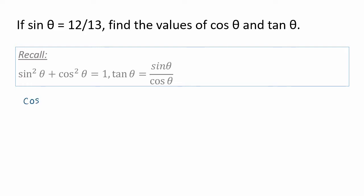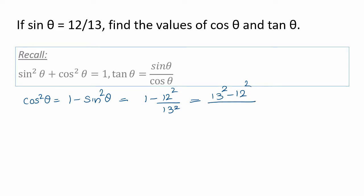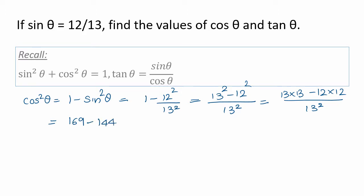First, let us write: cos square theta equals 1 minus sin square theta. We know sin theta is 12 by 13, so sin square theta is 12 squared by 13 squared. Therefore, cos square theta equals 1 minus 12 square divided by 13 square, which is the same as 13 square minus 12 square divided by 13 square. Let us simplify the numerator: 13 square is 169, and 12 square is 144, so the numerator is 169 minus 144, which gives 25 divided by 13 square.